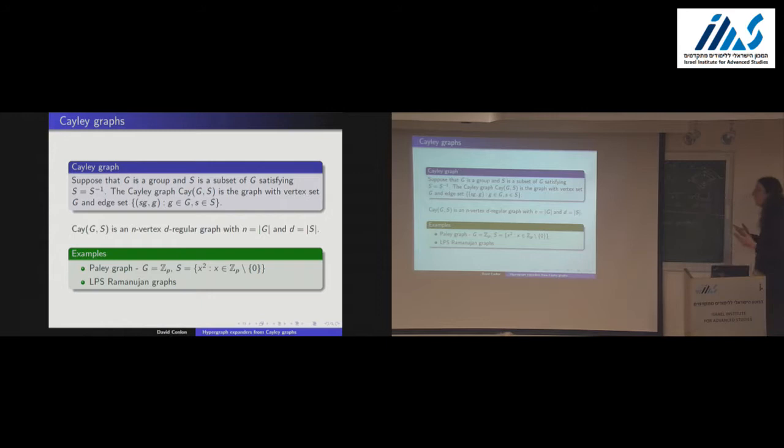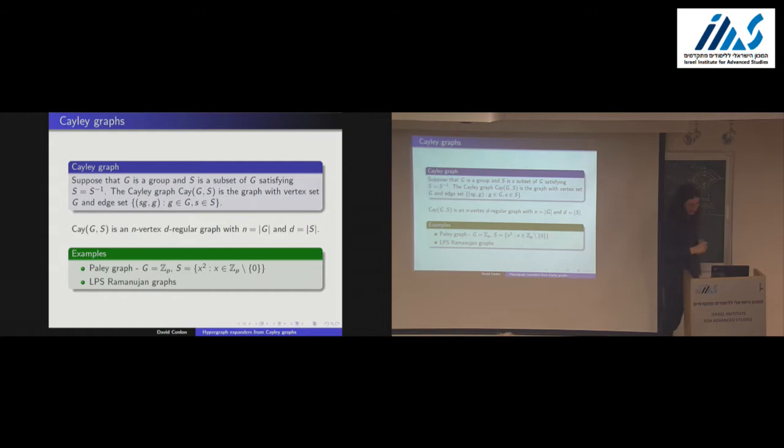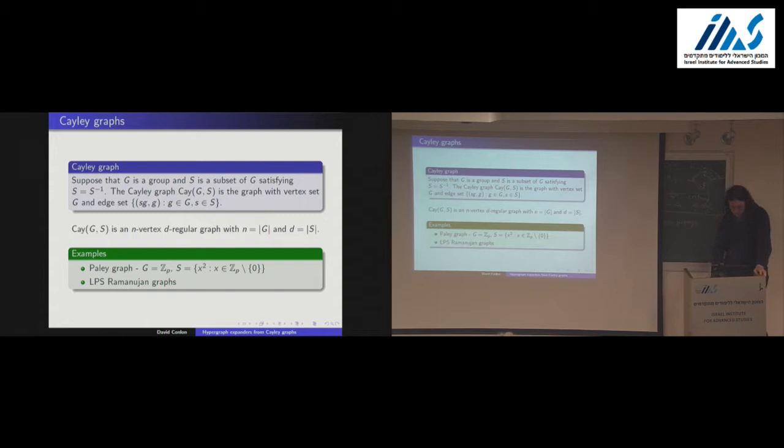As everybody knows, a Cayley graph is where you take a group, take some subset S of the group, and then join two elements if and only if their difference is one of the elements within S. The standard examples are usually the Paley graph, where the set of differences is just the set of quadratic residues, and the Lubotsky-Phillips-Sarnak graphs, which are more complicated but are still Cayley graphs.